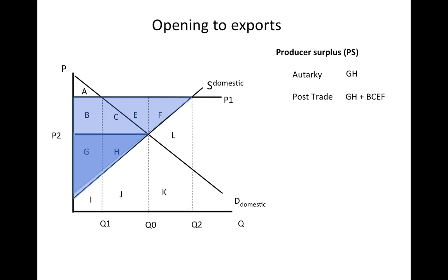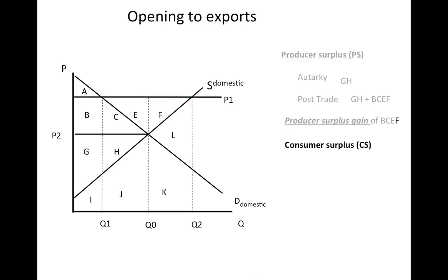Area F is the increase in producer surplus associated with firms that can profitably expand output — we'll come back to that. So the producer surplus gain is BCEF, the change in price over to the supply curve. But there's also an effect on consumers. The producer surplus aspect is the good part — new jobs, new production, new profits. But there are also people hurt by exports, in particular the domestic consumers of this product.